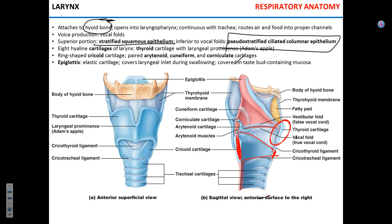In addition to the thyroid and cricoid, there are three paired cartilages: the arytenoid, corniculate, and cuneiform cartilages. The function of these three paired cartilages is to control the movement of your vocal cords and regulate speech production. All eight cartilages — cricoid, thyroid, arytenoid, corniculate, and cuneiform — are hyaline cartilage.